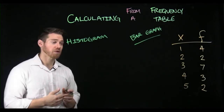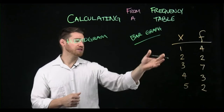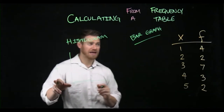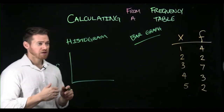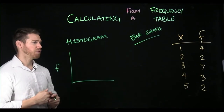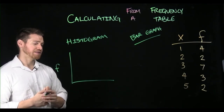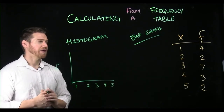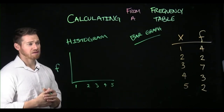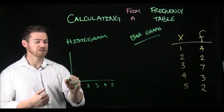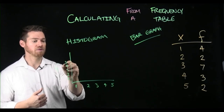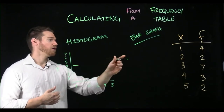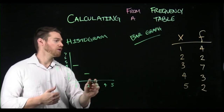So if these are continuous data and we made a histogram, it would have the frequency represented on the y-axis. On the x-axis, we're going to put the values that the variable can take — so one, two, three, four, five. We can then graph the data to represent the frequency. So if this is one, two, three, four, five, six, seven, we'd go up to four for the value one, up to two for the value two.